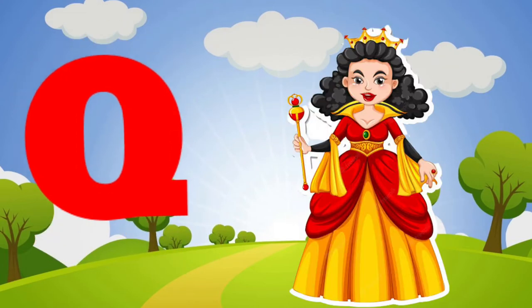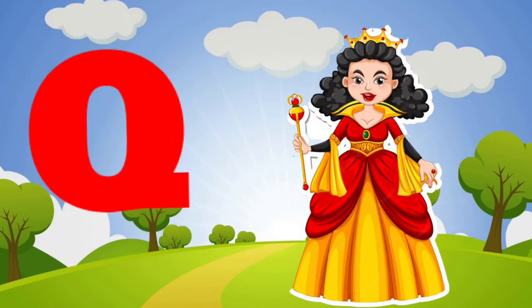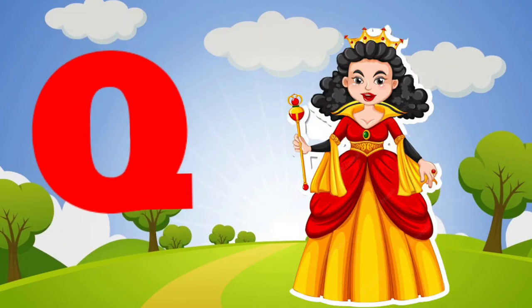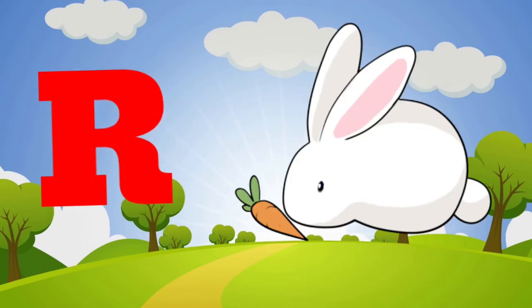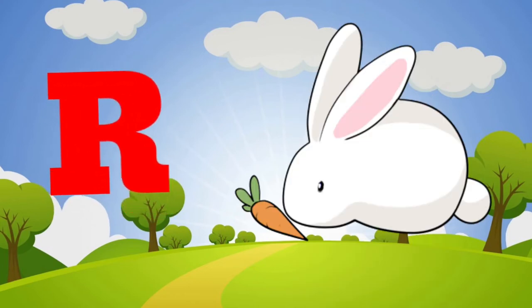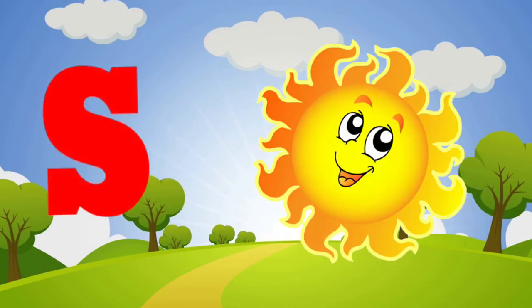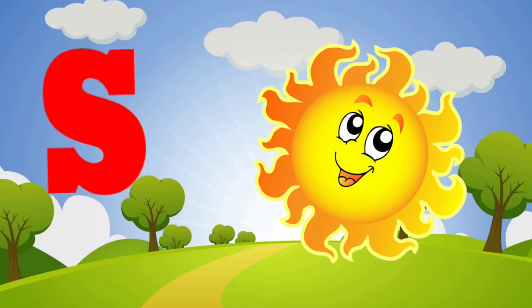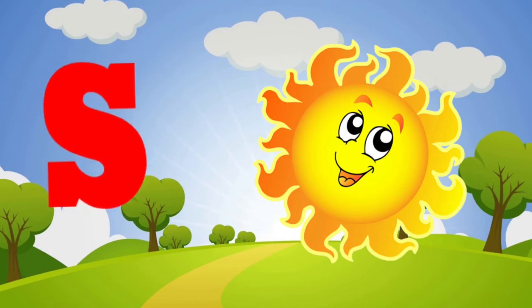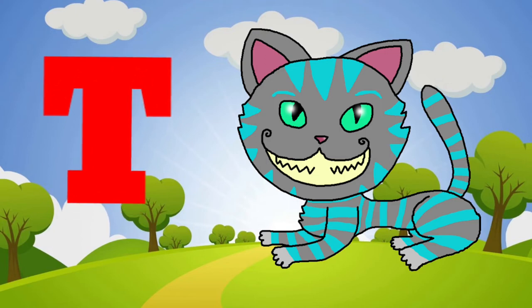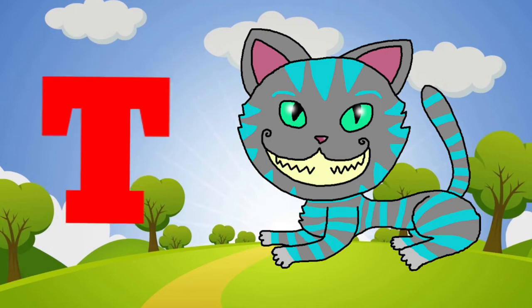Q is for queen, q-q-queen. R is for rabbit, r-r-rabbit. S is for sun, s-s-sun. T is for toad, t-t-toad.